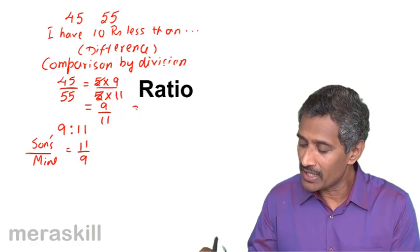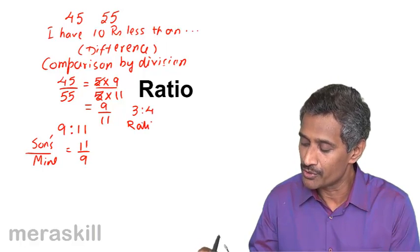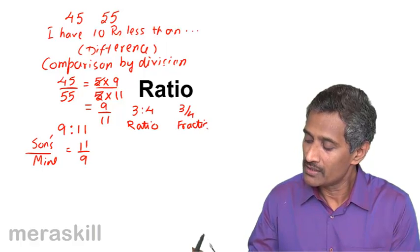Now let's take a ratio 3 is to 4, if you look at it as a ratio, and 3 by 4 as a fraction. What does this mean?